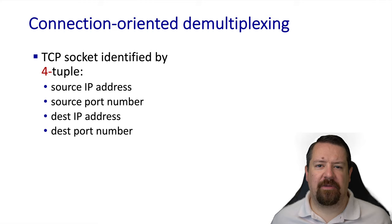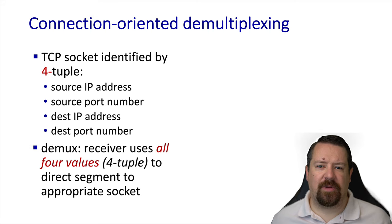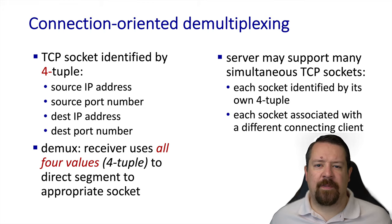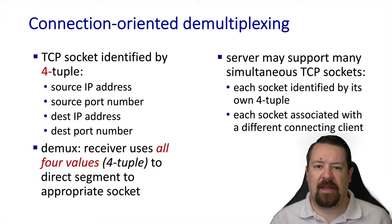Let's see how this works differently with a connection-oriented transport layer. We identified the UDP socket with a tuple of IP address and port number, but a TCP socket is identified by a 4-tuple because it is specific to both the source and destination port numbers and source and destination IP addresses. When demultiplexing happens, the receiver uses all four of those values to determine which socket the message needs to be delivered to. A server application can support many TCP sockets, each identified by its unique 4-tuple. TCP can have multiple sockets on the same local port number as long as each refers to a different remote client.